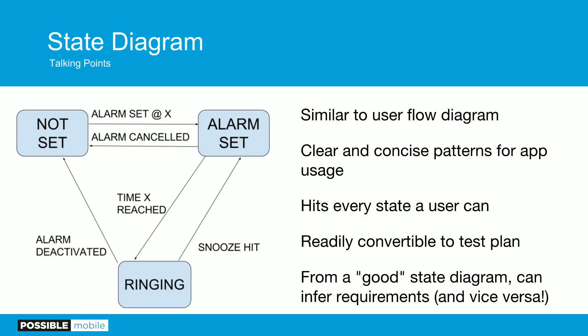You've probably seen these before. Designers call it a user flow diagram — it'd be prettier than what I've got, but they serve different purposes. This one is really just saying: what states can the app get into, how do I move through them? It has clear and concise usage patterns, hits every state a user can reach, and is readily convertible into a test plan. Also, from a good state diagram you can easily infer requirements. Most importantly, this has nothing to do with the development process — you can start thinking about how you're going to test an app long before a line of code gets written.